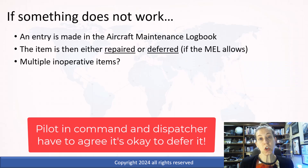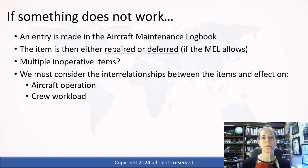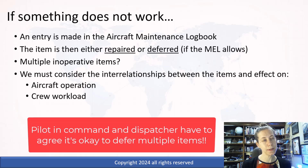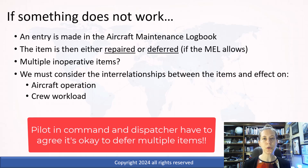If we have lots of things that are not working — and that could happen — then you have to consider the relationship between these things so that we don't overload the crew, because there are interrelated systems on the aircraft. We don't want this to become a safety problem, because yes, thing A could be broken, thing B could be broken. If we throw in thing C, how does that affect A and B and what the crew is dealing with for their flight?